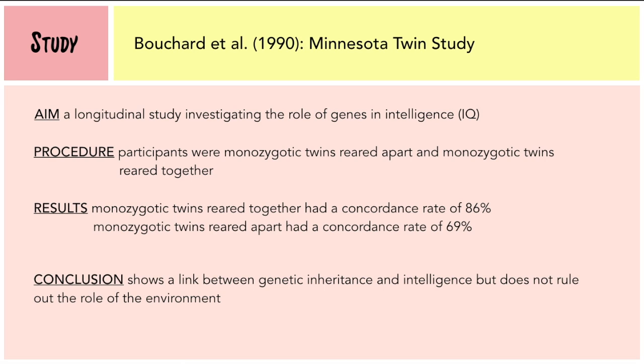The results showed that monozygotic twins reared together had a concordance rate of 86%, and monozygotic twins reared apart had a concordance rate of 69%. The twins reared together had a higher concordance rate, which means there is a high chance that genetics plays a role in intelligence. However, though this shows a link between genetic inheritance and intelligence, it does not rule out the role of the environment.